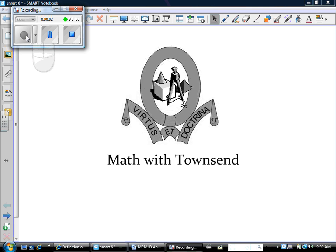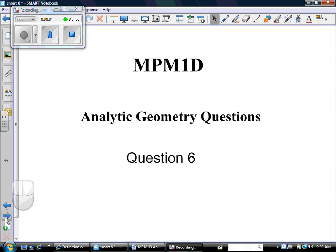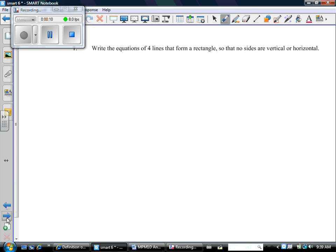Hi, this is Ms. Townsend, and welcome to Math with Townsend. This is the Grade 9 Academic Analytic Geometry Summative, and it's Question 6. So the question says to write the equations of four lines that form a rectangle so that no sides are vertical or horizontal.